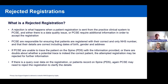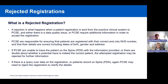A rejection is what happens when a patient registration is sent from the practice clinical system to PCSE and there's either a data quality issue or PCSE require additional information in order to accept the registration. PCSE are responsible for ensuring patients are registered with their correct and only NHS number and that their details — including date of birth, gender, and address — are correct. If PCSE are unable to trace the patient on the Spine or PDS with the information provided, or if there are doubts about whether a potential trace is correct, the attempted registration may be rejected for further information.